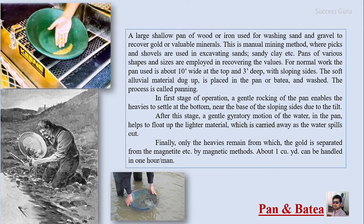The first method is the pan and batia. This is a large shallow pan of wood or iron used for washing sand and gravel to recover gold or any valuable minerals. It is a manual mining method where picks and shovels are used to excavate sandy clay and similar materials. Pans of various shapes and sizes are used; a typical pan is about 10 inches wide at the top and 3 inches deep with sloping sides. The soft alluvial material is dug up and placed in the pan to be washed — this process is called panning.